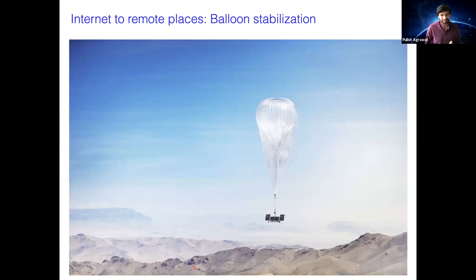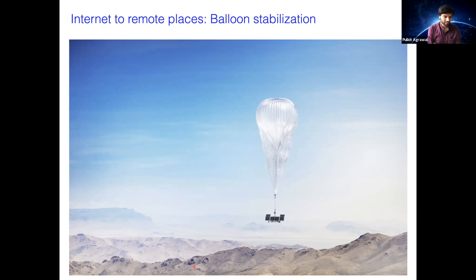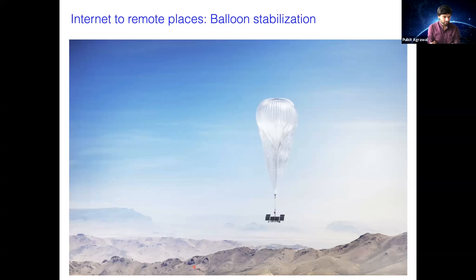A most recent example is balloon stabilization. There's a balloon supposed to provide Wi-Fi connection — this was a Nature paper from Google. The problem is that wind is blowing and you don't have a good model of how the wind blows, so having the balloon be stable is non-trivial. They leveraged reinforcement learning to stabilize the balloon.